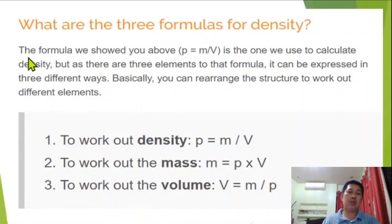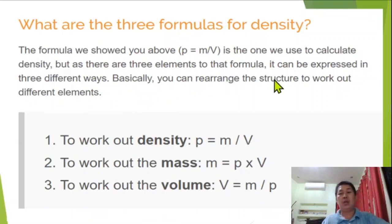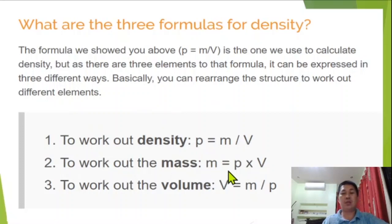What are the three formulas for density? The formula shown above — density equals mass over volume — is used to calculate density. Since there are three elements, the formula can be expressed in three different ways by rearranging it. To work with density: density equals mass over volume. To work with mass: mass equals density times volume. To work with volume: volume equals mass over density.